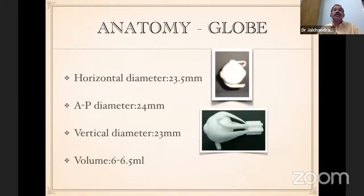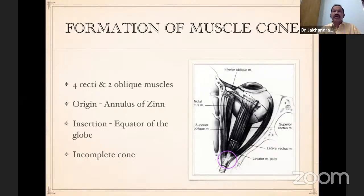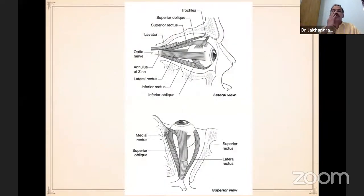Next, globe anatomy. Horizontally it is 23.5 millimeters, anteroposterior about 24 millimeters, and vertical diameter around 23 millimeters. The volume of the globe occupied in the orbit is about 6 to 6.5 ml. The globe is moved by 6 extraocular muscles — mainly 4 recti muscles and 2 oblique muscles. They all originate from a common tendinous fibrous ring called the annulus of Zinn, and get inserted just anterior to the equator of the globe, forming an incomplete muscle cone-like structure. Between these muscles there are septa.